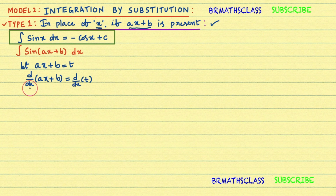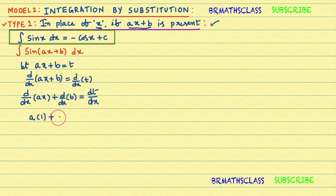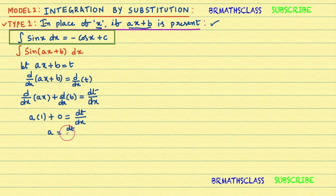Derivative of ax plus b: derivative of ax plus derivative of b. This equals dt/dx. Now, a is a constant, take it outside; derivative of x is 1, plus b is a constant so derivative of constant is 0. That equals dt/dx. So a plus 0 is a, therefore a equals dt/dx, which gives dx equal to (1/a) dt.